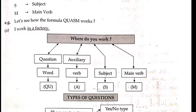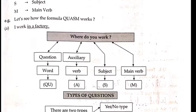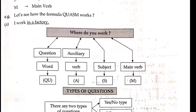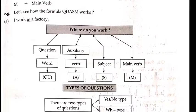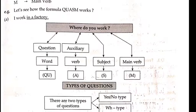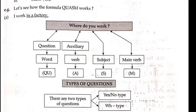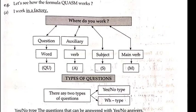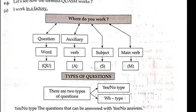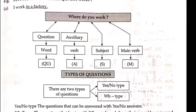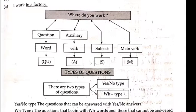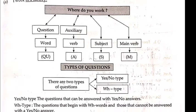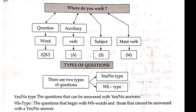Now, types of question. There are two types of question: Yes/No type and WH type. Yes/No type: the question that can be answered with yes or no. WH type: the question that begins with a WH word and those cannot be answered with a yes or no answer — that is the inquiry type.